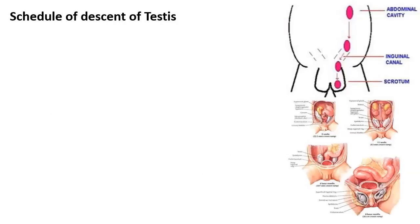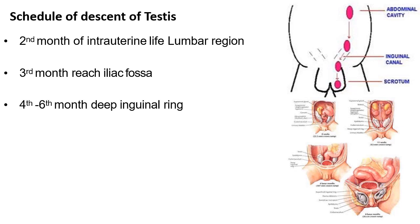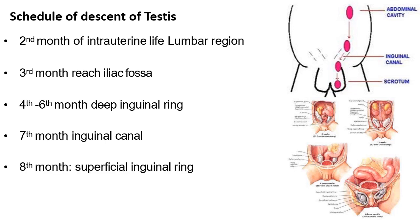It is important to know the schedule of descent of testes. At the second month of intrauterine life, they are at the lumbar region. By the third month, they reach the iliac fossa. At the fourth to sixth intrauterine month, they reach the deep inguinal ring. By the seventh month, they enter the inguinal canal. In the eighth month, they reach the superficial inguinal ring. At birth, at the end of the ninth month of intrauterine life, the testes should be present in the scrotum.